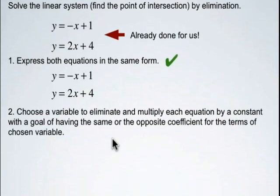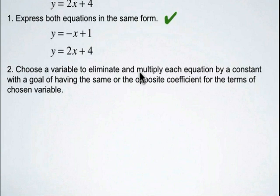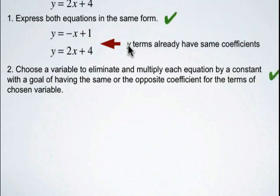Now step 2, we've got to choose to eliminate by multiplying each equation with a constant with the goal of having the same or the opposite coefficients for the terms of the chosen variable. So we're going to use y. We're going to eliminate y because y already has the same coefficients.